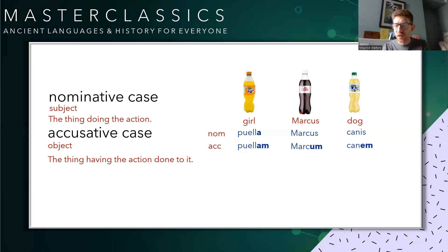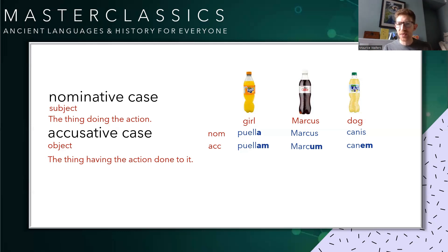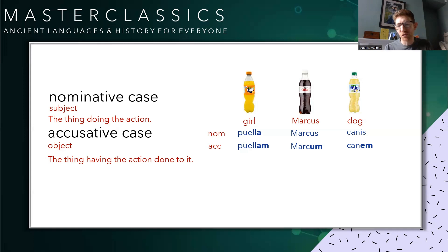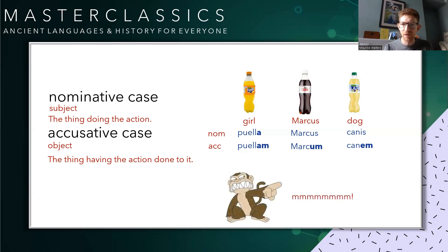We discovered that the Latin word for girl is puella. When it becomes accusative — so when it's having an action done to it — it becomes puellam. Similarly with Marcus: Marcus becomes Marcum, and canis becomes canem. So what we're seeing happening here is that an M is really being added. I put the picture of the monkey up last week just to remind us of that accusatory M, which belongs with the singular forms of the nouns when they go into the accusative.